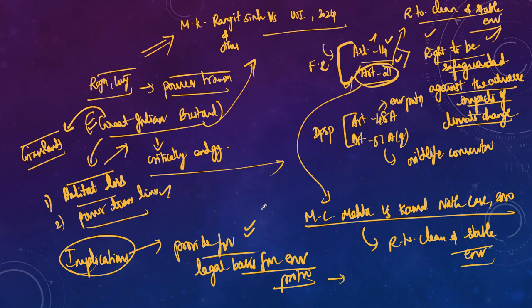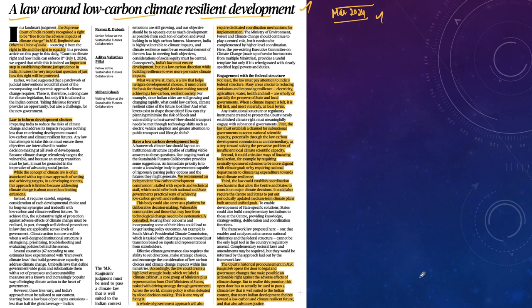In India, we always face the dilemma of development versus environment. If you want to protect the environment, you also need to focus on development. Finding a solution requires going for low carbon growth. This particular article addresses that — after the Supreme Court judgment, what challenges will state governments face in creating a climate law, and what suggestions can be given for successful implementation and better protection of the rights guaranteed in this landmark judgment.